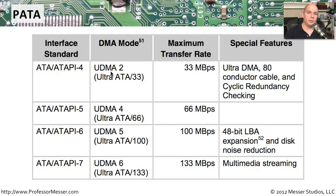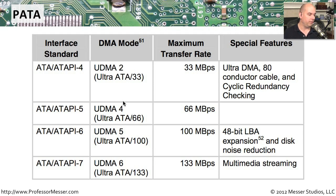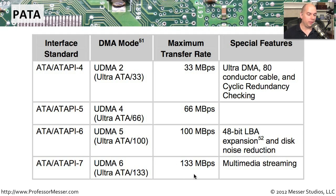Some of the legacy storage devices we used would connect through a parallel ATA interface, and those interfaces had different speeds as the standards changed through the years. There's ATA-4, ATA-5, ATA-6, and ATA-7, which also correlate back to the ATAPI standards. These used an ultra direct memory access (UDMA) mechanism for modes 2, 4, 5, and 6, with different transfer rates so the drive could talk directly to memory as fast as possible. On ATA-4, we had about 33 megabytes per second as a maximum transfer rate, and on ATA-7, we had 133 megabytes per second.